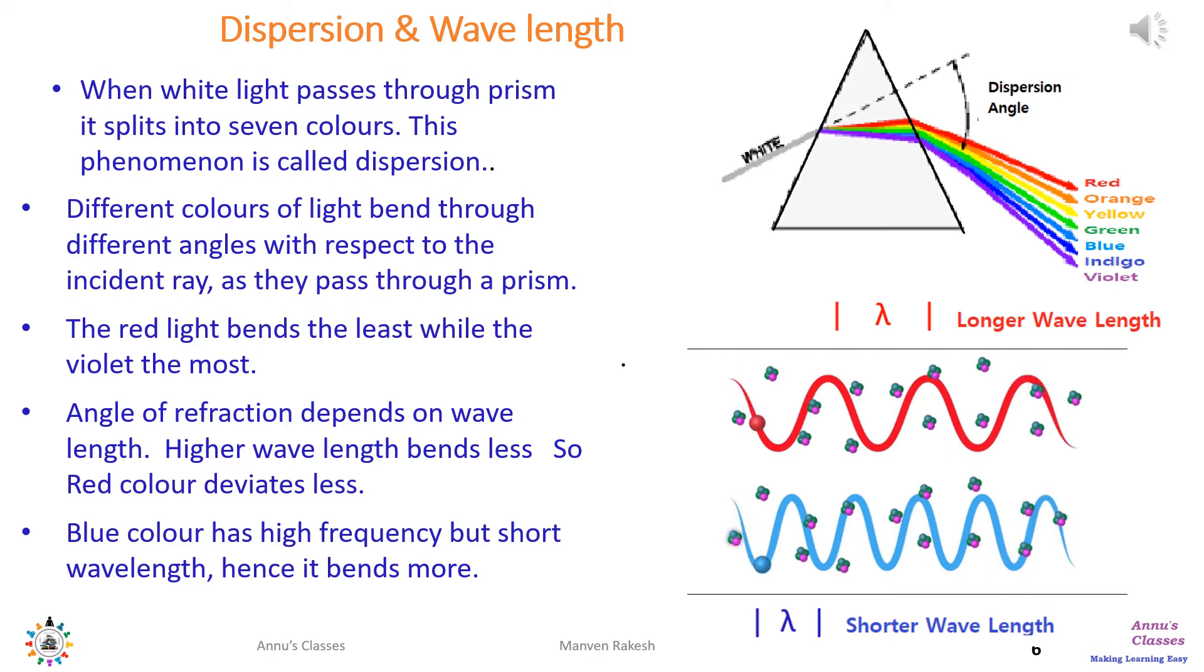Why are we getting these seven colors? Because the different component colors of white light, when they pass from one medium to another medium, undergo differential refraction. The refraction depends on the wavelength of the color.